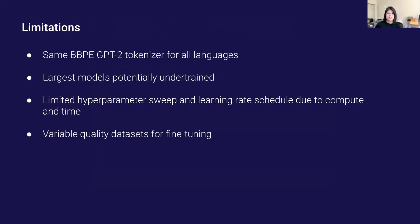On the limitations side, the first issue is that I used the same tokenizer for all languages. This is a problem because the tokenizer has a 50K vocab size, while Chinese has over 50,000 characters, meaning a lot of the tokenization is probably quite inefficient and could impact model performance significantly. For future work, you would want to train tokenizers specific to each language.